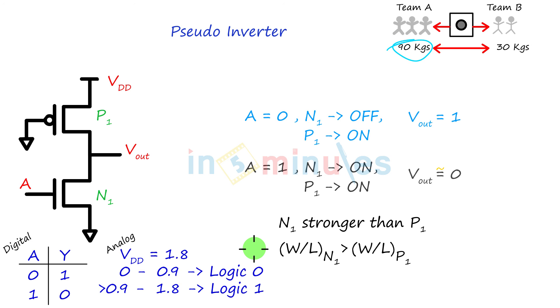Similarly, we can understand how pseudo NMOS NAND would work, pseudo NMOS NOR would work, and we have already seen the schematic. Now we go ahead and understand what is the drawback of a pseudo.